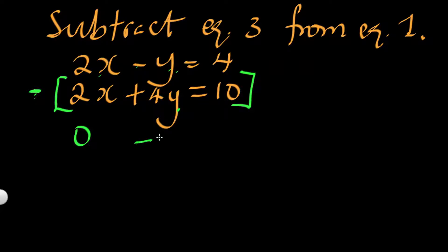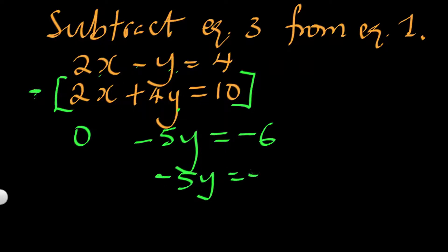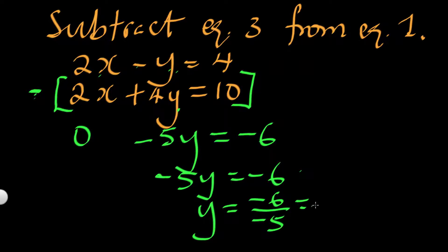The answer for the y terms is minus 5y. This equals 4 minus 10, that's minus 6. The x's subtracted each other, the y's subtracted each other, and the constants subtracted each other. So I have minus 5y equals to minus 6 — I have eliminated my x. That's what we mean by the method of elimination. This means y equals minus 6 over minus 5, which is 6 over 5.